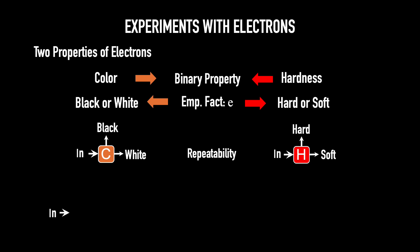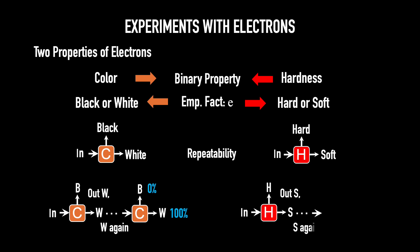A key property of these hardness and color boxes is repeatability. If I send random electrons into a color box and one comes out the white aperture, then I send it through another color box, I can be 100% confident 100% of the time it will come out the white aperture again and 0% of the time will it come out the black aperture. Do the same with hardness. If I send a bunch of electrons into a hardness box and take out the ones that come out soft, then send them again into another hardness box, they'll come out soft with 100% confidence 100% of the time.